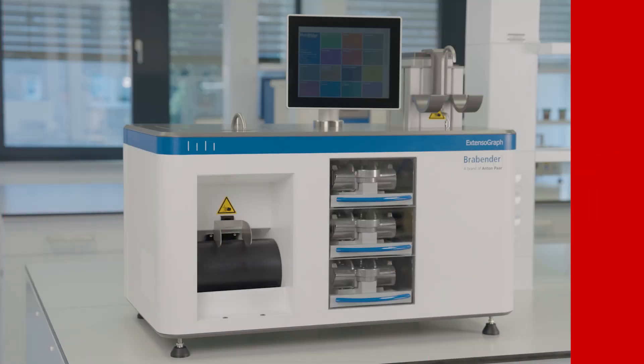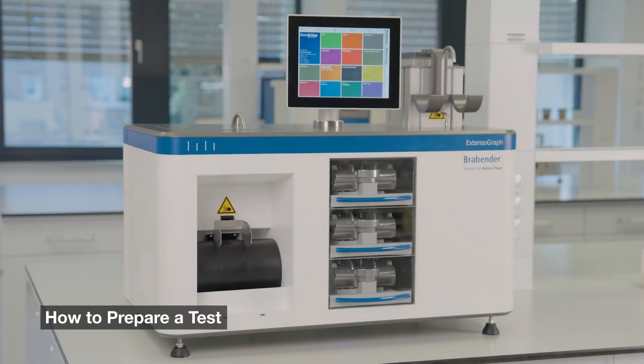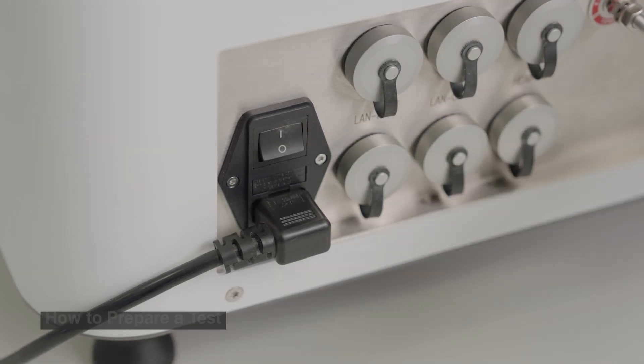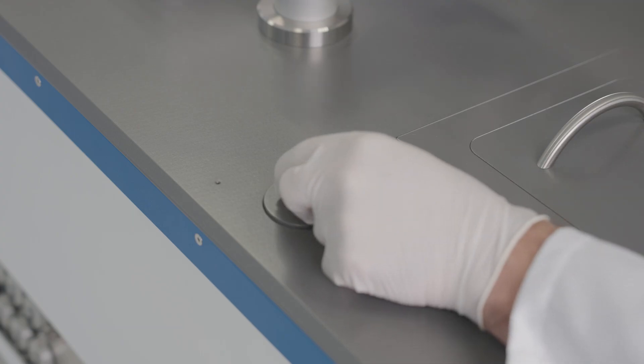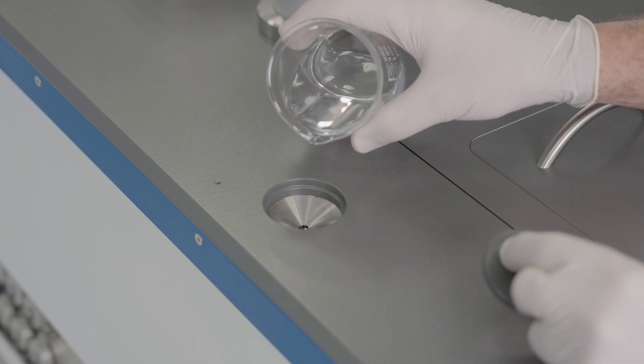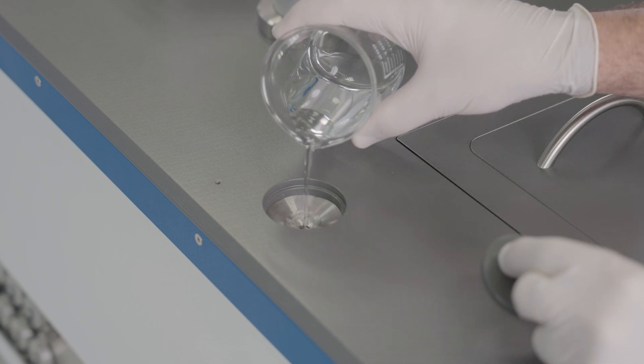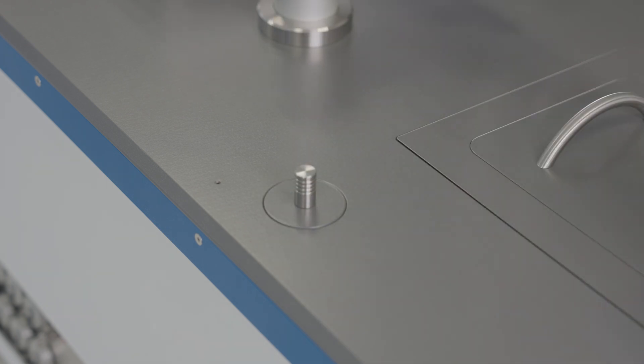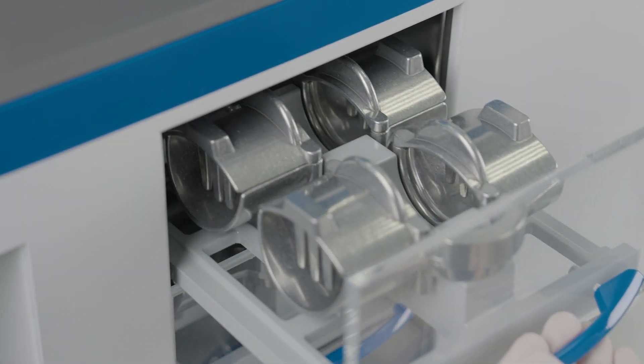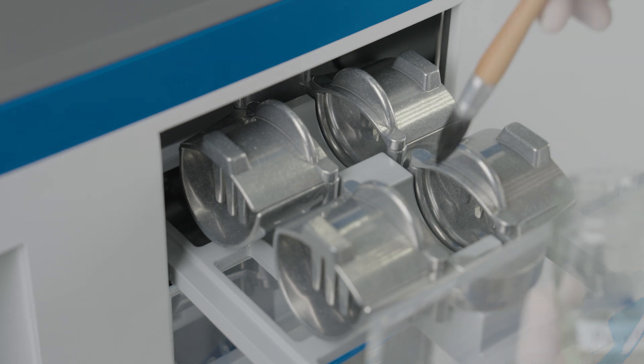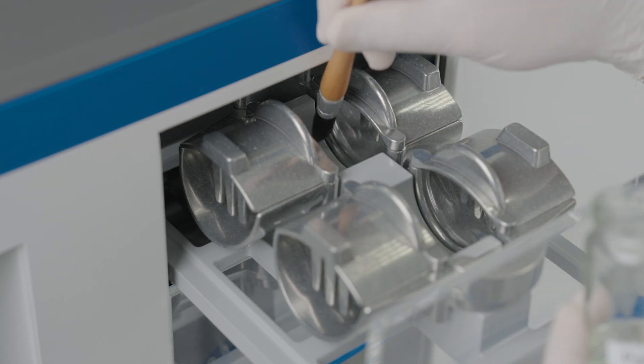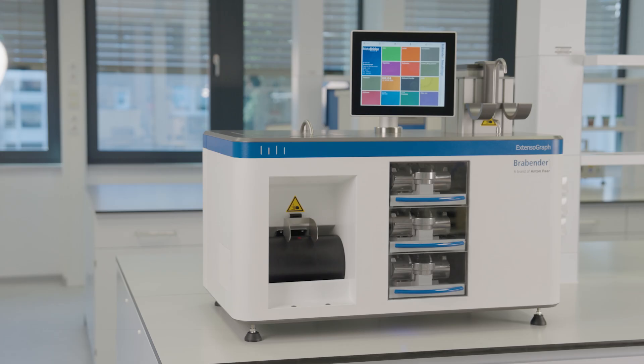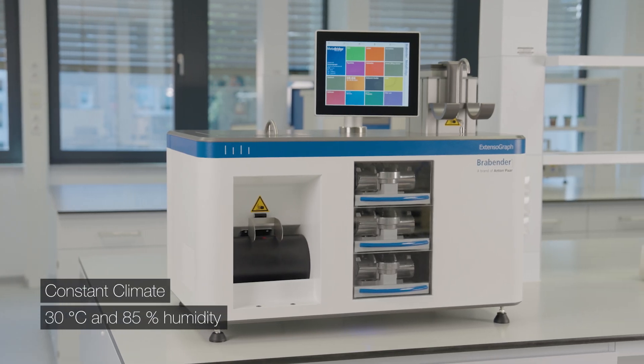In this quick start guide, we will show you how to set up and use the extensograph. Switch on the device and fill the water reservoir with 200 milliliters of water, then remount the lid. Open the tray and grease the tray supports with a thin film of paraffin oil daily to prevent dough from sticking. Close the tray and allow it to stand for 30 minutes to achieve a constant climate.